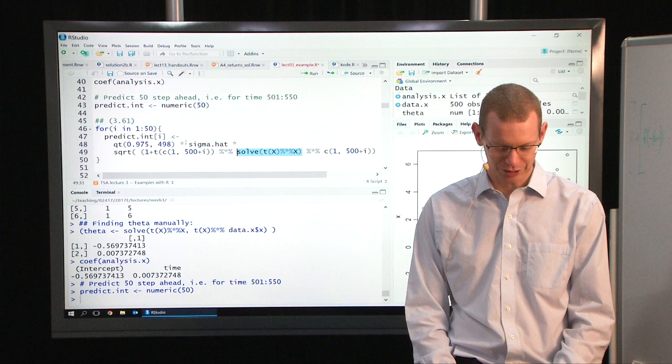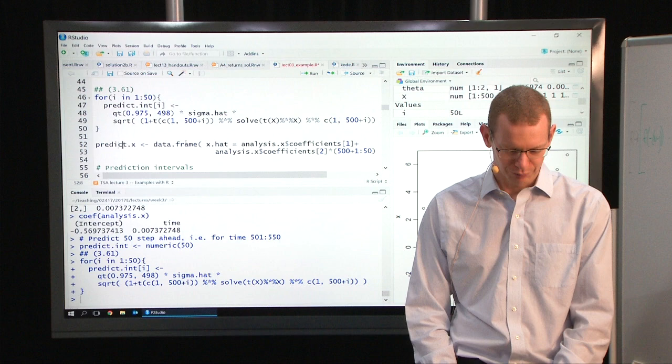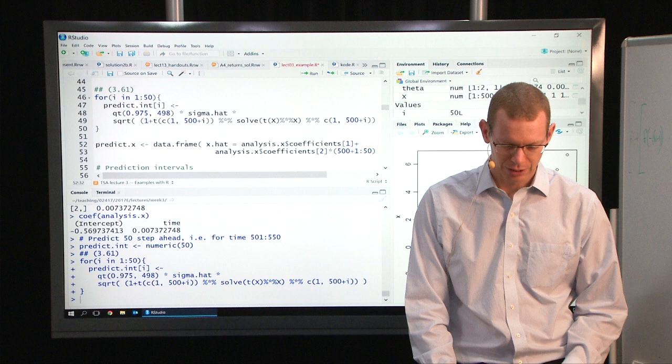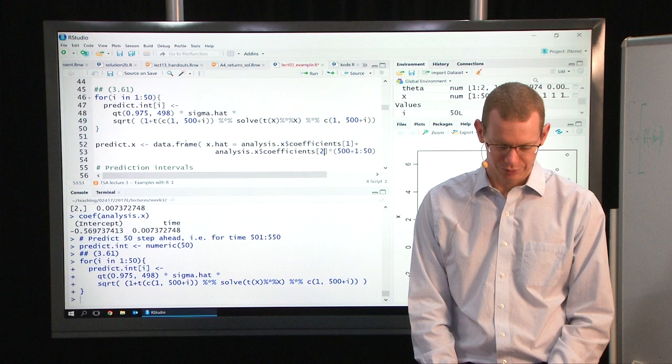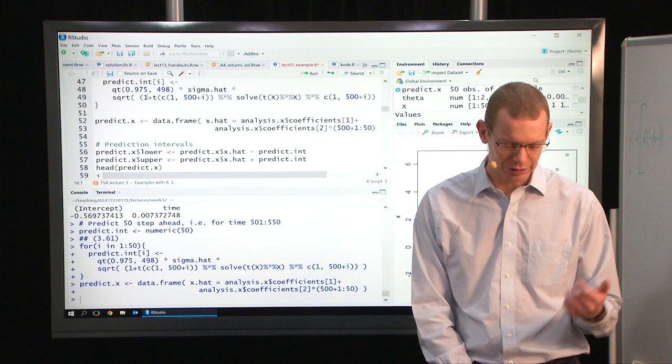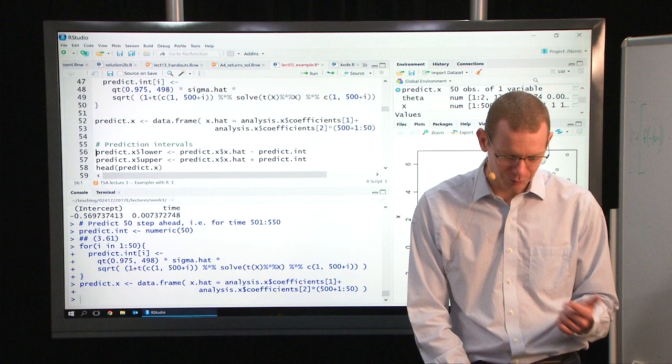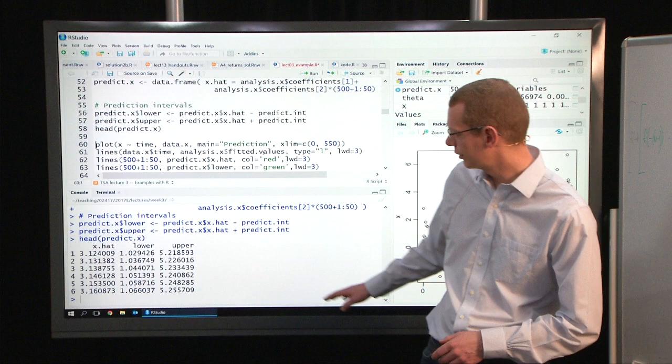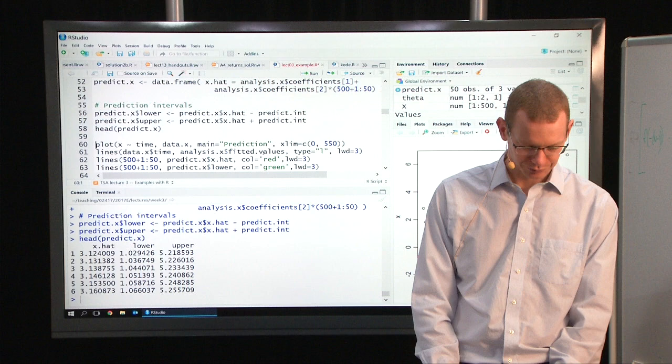If I want to make it more efficient, I should do this once and for all outside the loop, but that's how things are sometimes. Let's just run this loop here. Then we can make data frame where we just have the predicted x hat. It's the intercept plus the slope times the time point where we're making the predictions. Then we do the lower bound for the prediction interval, and we're doing a 95% prediction interval. That's the predicted value minus the width of the interval, and then plus the interval. What we have here is the predicted value and the lower and upper bound for that.